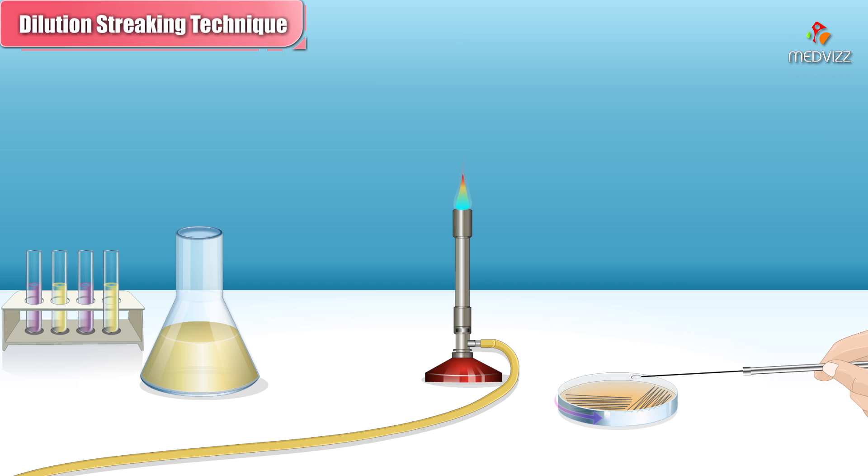The procedure is repeated again. Toward the end of the streak, few bacteria remain on the loop, so at that point individual cells will land and stick to different places on the agar surface.